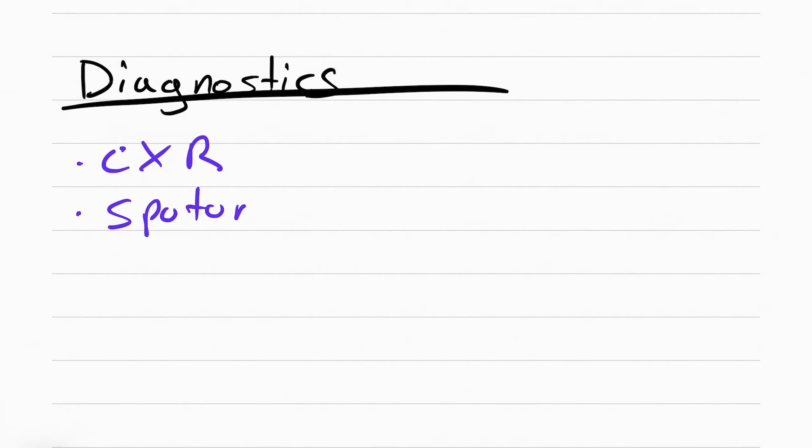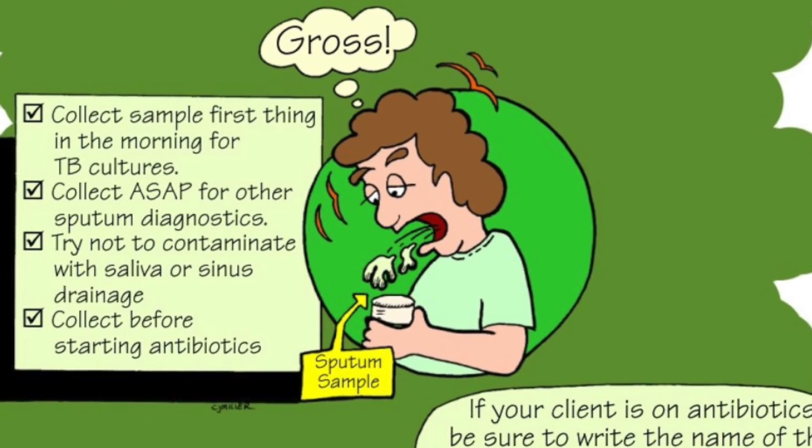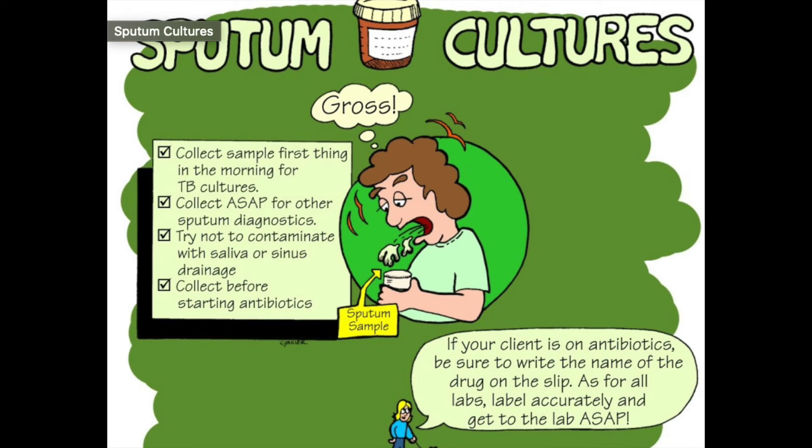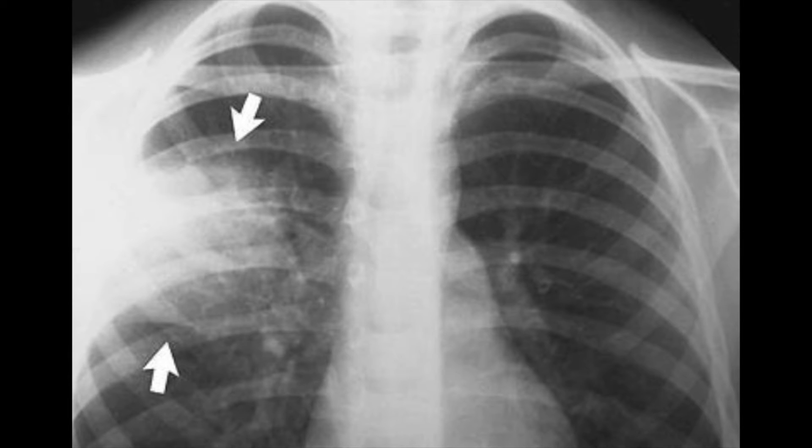Now the diagnostics for pneumonia are a chest x-ray and sputum cultures. You have to know how to get sputum cultures - have the patient do a forceful cough to get it out. If they can't get it out, you'll have to suction it out. Make sure you collect it first thing in the morning. The chest x-ray for pneumonia generally has white patchy areas. These are areas of infiltrate.